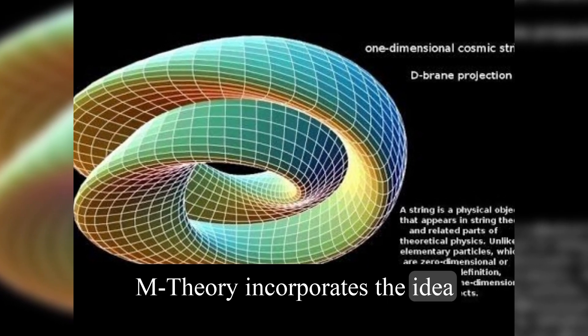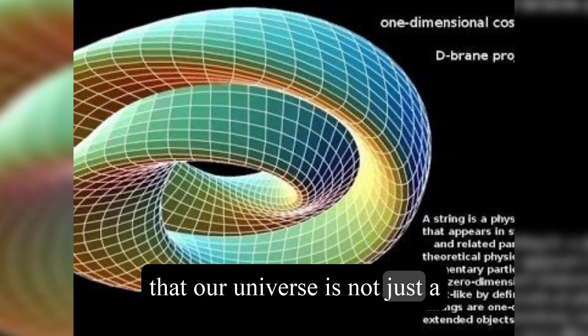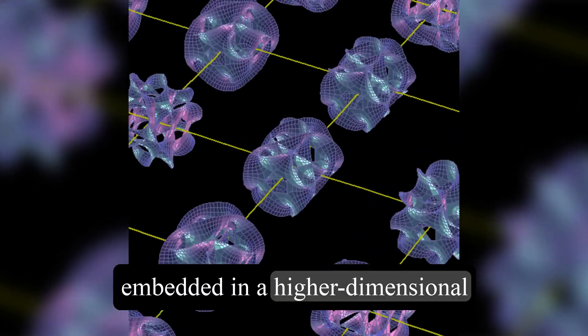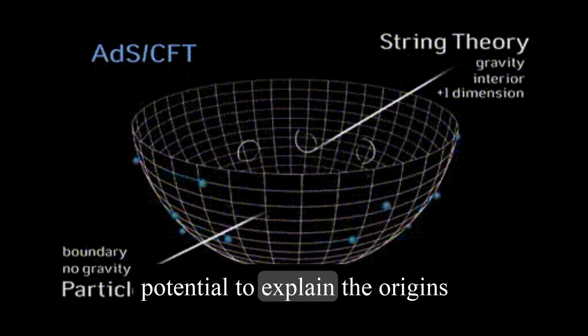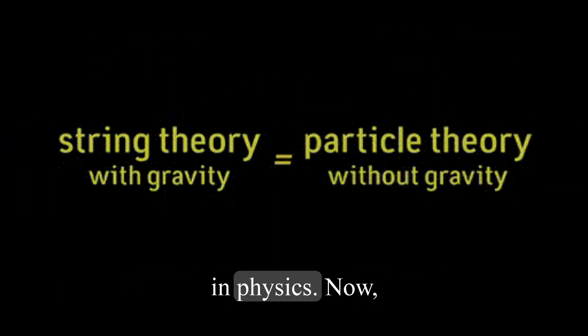M-theory incorporates the idea that our universe is not just a three-dimensional space but is embedded in a higher-dimensional bulk. This theory has the potential to explain the origins of our universe and address some of the long-standing questions in physics.